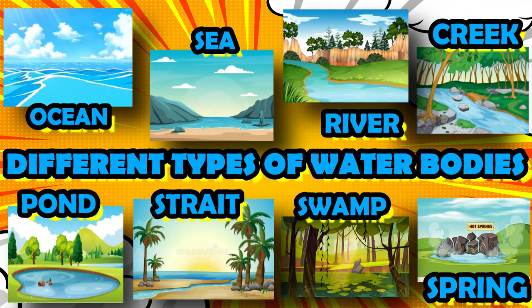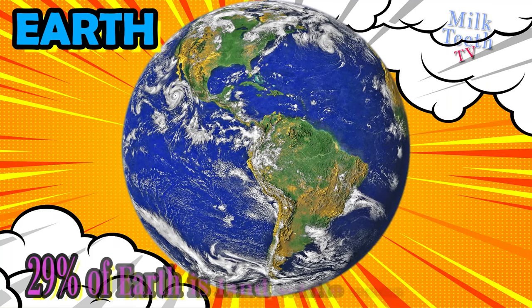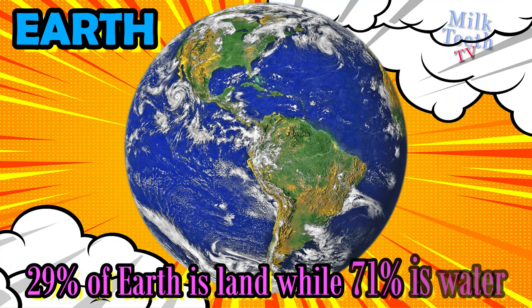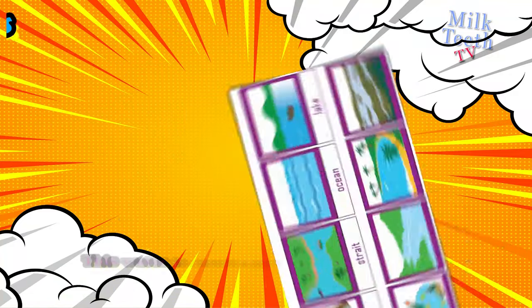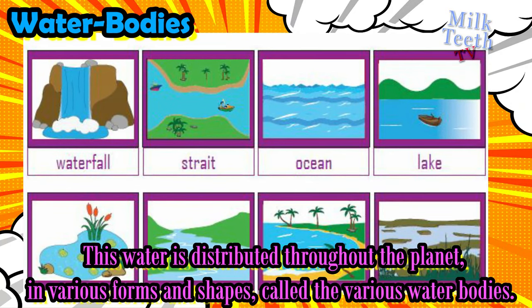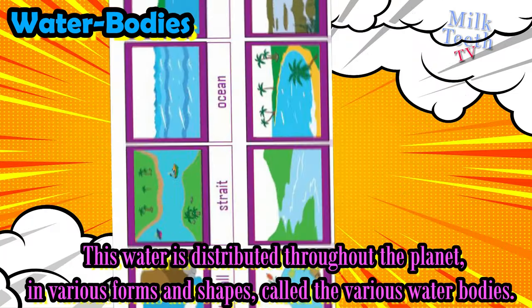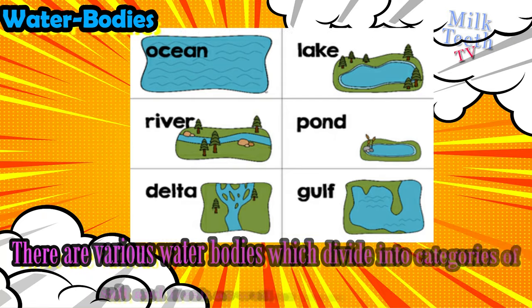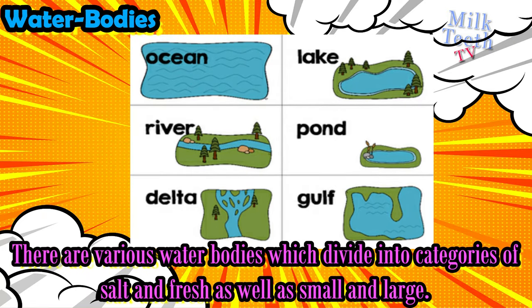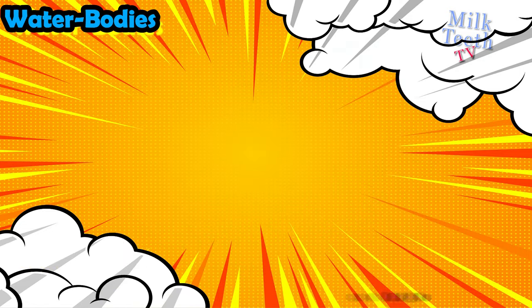Hi my dear friends. Do you know this is the planet Earth? 29% of Earth is land, while the rest 71% of Earth is covered with water. This water is distributed throughout the planet in various forms and shapes, called the various water bodies. Examples of different types of water bodies are ocean, waterfall, strait, lake, river, pond, etc. There are various water bodies which divide into categories of salt and fresh, as well as large and small.